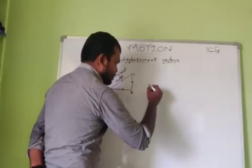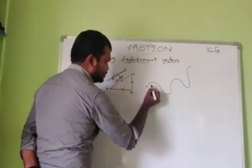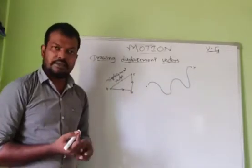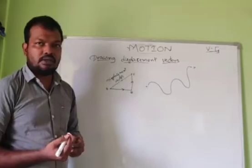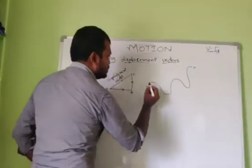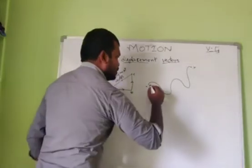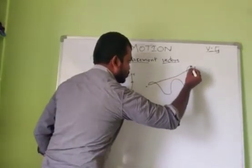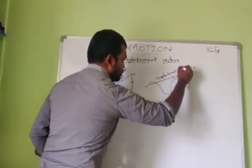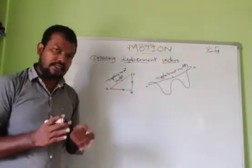Let us take one more example. If a body moves along a curved path starting from point X and reaches to point Y, this actual path followed by the body represents the distance. To draw the displacement vector, we take the shortest distance from initial position X to final position Y and draw a straight line. This is called the displacement vector, because it has a particular direction and it is the shortest distance.